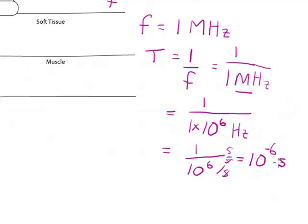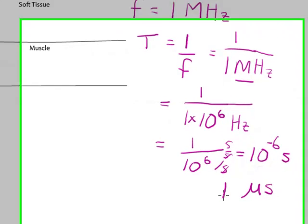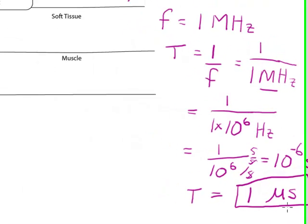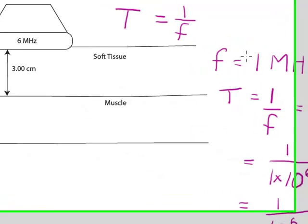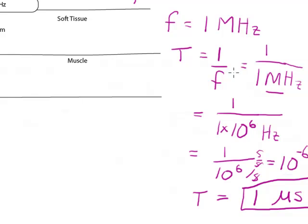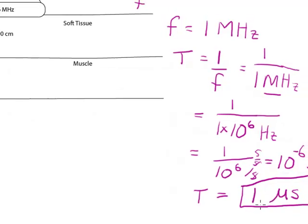So 1 megahertz is equal to 10 to the minus sixth seconds. Now I can also write this using a metric prefix. I know that 10 to the minus sixth is the prefix micro, so this would be 1 microsecond. So the period for a 1 megahertz transducer is 1 microsecond. Now it's going to turn out that if I'm given units in megahertz, I'll always be able to, if I just use 1 over those units, my period will come out to be in microseconds.